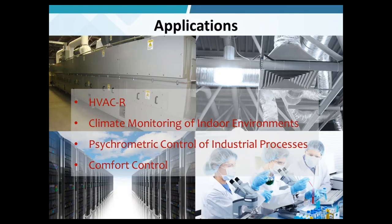What are the application examples for RHT Climate? It can be used in HVACR applications — heating, ventilation, air conditioning and refrigeration systems. There are many possible use cases: it can be used for climate monitoring of indoor environments like laboratories, clean rooms, or data centers. For more strict requirements, it can be applied to psychometric control of industrial processes. And it can also be used for comfort control where air moisture and temperature need to be managed.